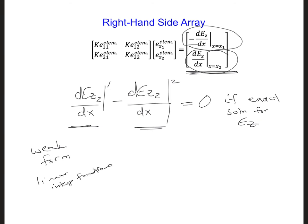For linear interpolation functions, the first derivative, dE z dx, or the slope of E z d, is a constant across each element. But there may be a step discontinuity at the boundary between elements here, because we never enforced continuity of the unknown across element boundaries.